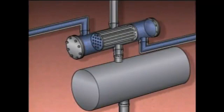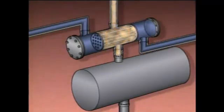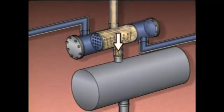On the shell side of the condenser, vapor passes through the inlet and flows around the tubes. When the vapor comes into contact with the cool surfaces of the tubes, heat is transferred from the vapor through the walls of the tubes to the cooling water. As heat is transferred to the cooling water, the vapor cools and condenses on the surfaces of the tubes. The condensed vapor, or distillate, drips off the tubes and falls to the bottom of the shell.